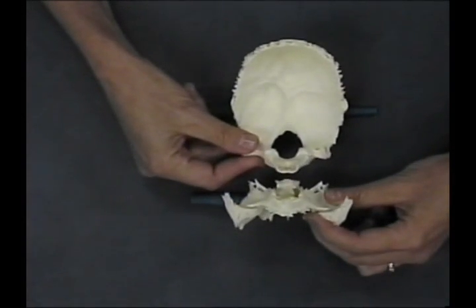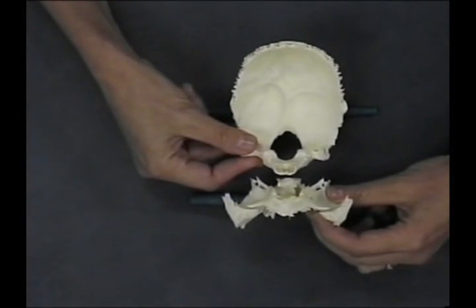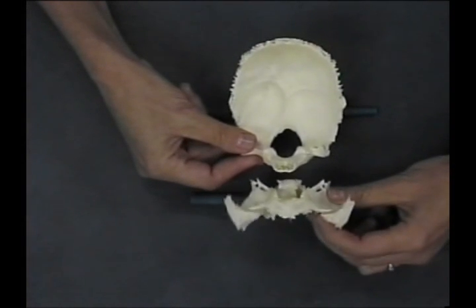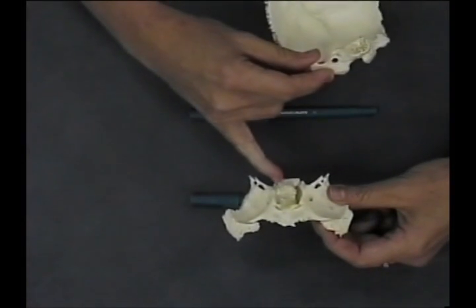And again, if it goes the other way, they both move this way, then that's going to be an inferior vertical strain named because of what's going on right here.